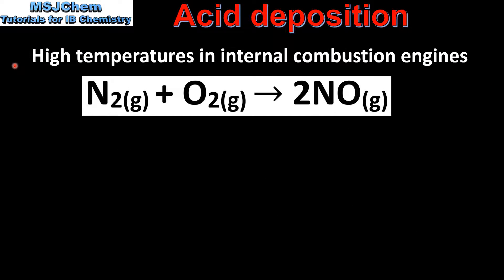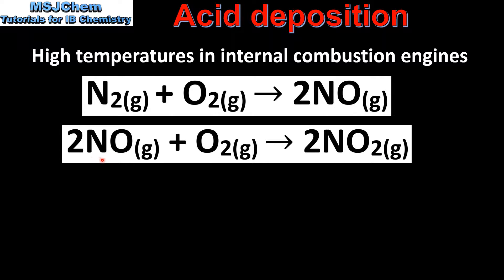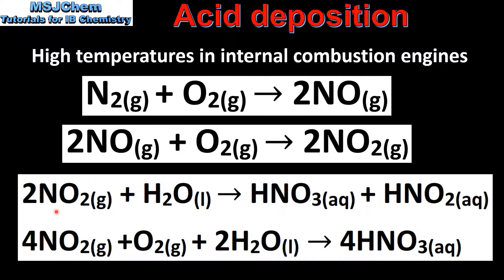Next we look at the formation of nitrous and nitric acid. This reaction, which occurs at high temperatures in internal combustion engines, involves nitrogen reacting with oxygen to form nitrogen monoxide. In the next step, the nitrogen monoxide reacts with oxygen to form nitrogen dioxide.